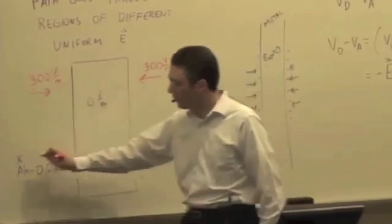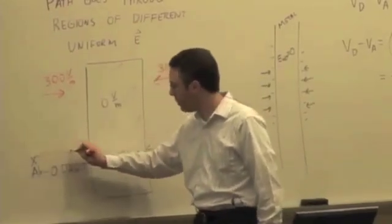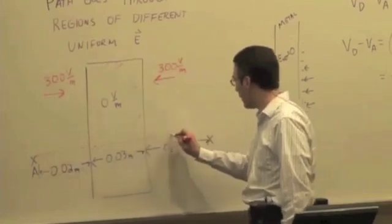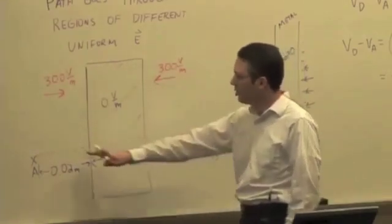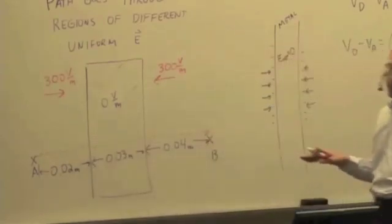And our path goes, we said we're starting at A, we're going to B, right? So I'll just pick a path. It goes along a straight line. It goes straight through the block directly over to B.